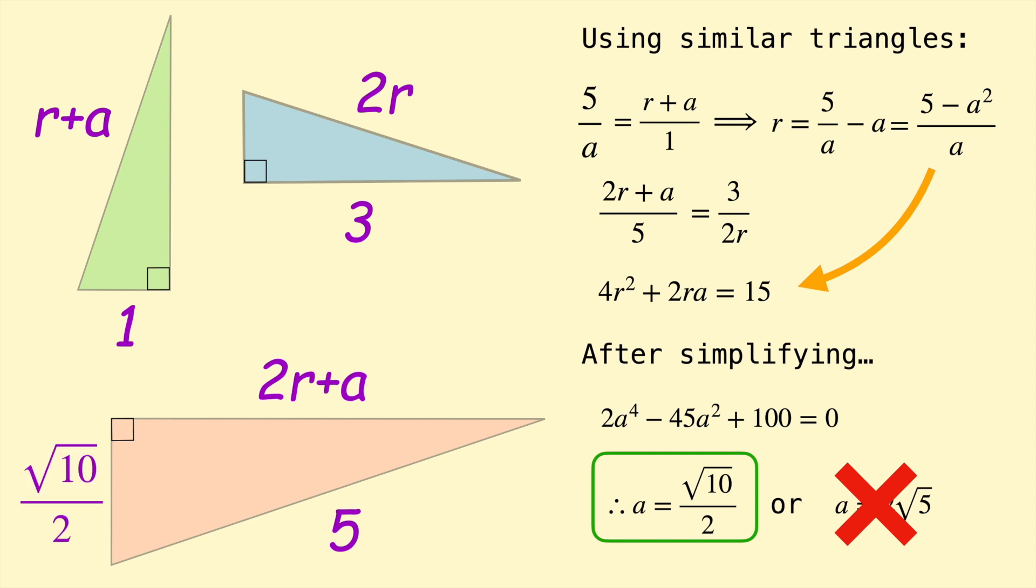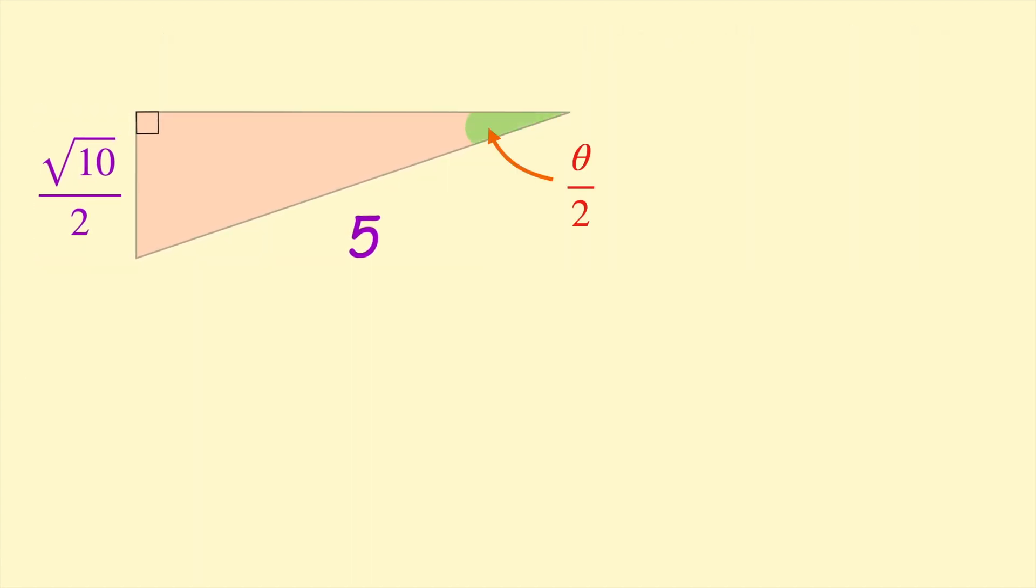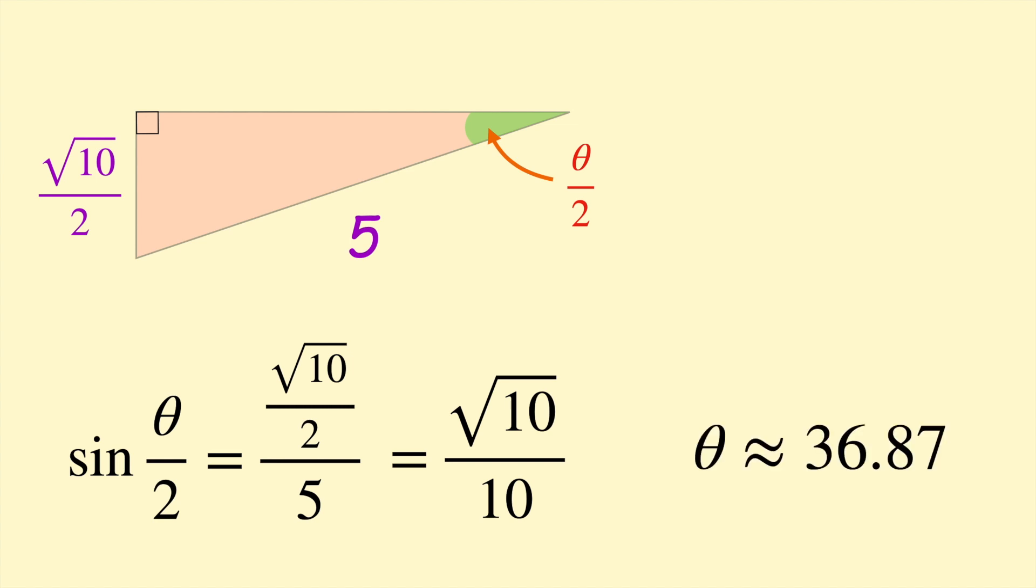So we have a solution for A of root 10 on 2, and that's actually enough to solve for theta. So we now know the side length of this right triangle is root 10 on 2, and remember the angle was theta on 2. So using our trig ratios we can say sine of theta on 2 equals the opposite side over the hypotenuse, root 10 on 2 on 5. Simplifying that you can write that as root 10 on 10, and then using the inverse sine of root 10 on 10 then multiplying by 2, you should get a final solution of theta approximately equal to 36.87.